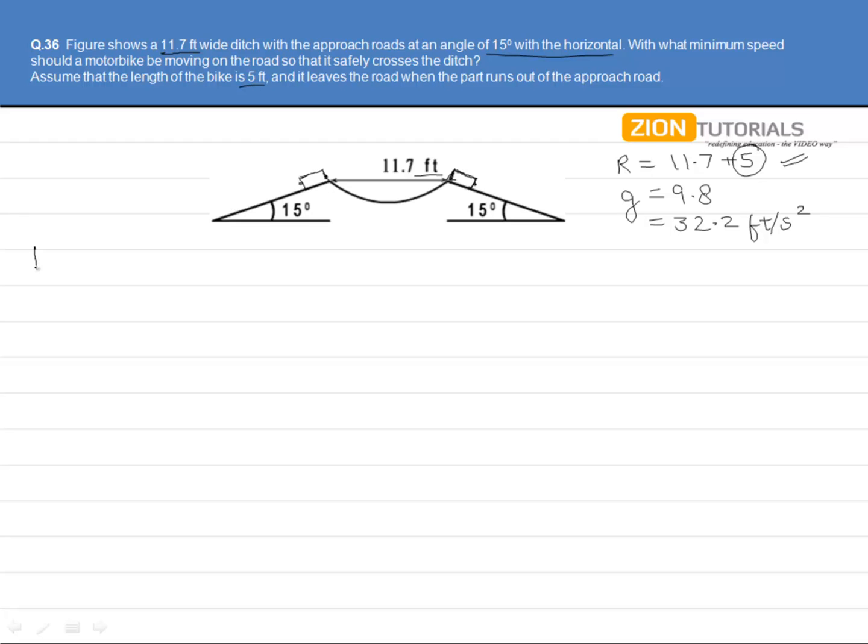Further, we have the formula of range for the projectile motion, which is R equals to u square sine 2 alpha upon g.